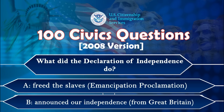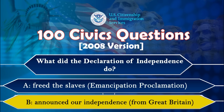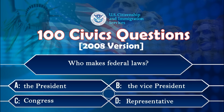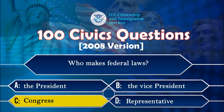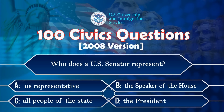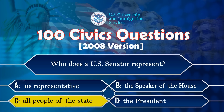What did the Declaration of Independence do? Announced our independence from Great Britain. Who makes federal laws? Congress. Who does a US senator represent? All people of the state.